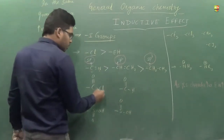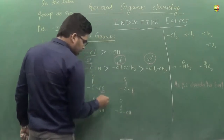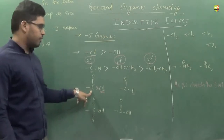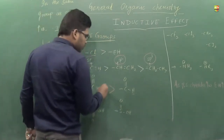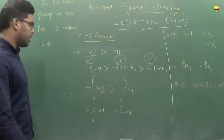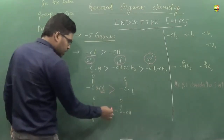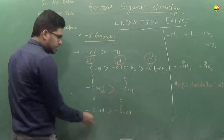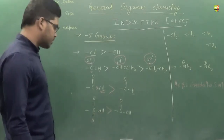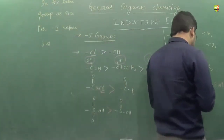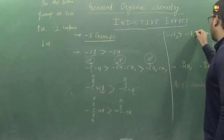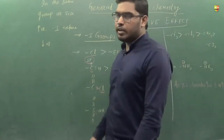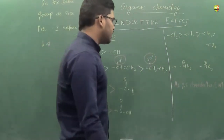For COCl vs COOH: chlorine being more electronegative than hydrogen makes the carbon more electron-deficient, so COCl > COOH in minus-I effect. Adding one more C=O group (as in SO3H) withdraws more electrons, increasing the order. For CF3, CCl3, CBr3, CI3, the order of minus-I follows fluorine maximum, then chlorine, then bromine, and iodine is minimum.